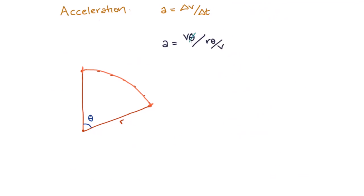And if you cancel out the thetas and move the v up to the top, we get that the acceleration a is equal to the velocity v squared divided by r the radius. We have now found the magnitude of the acceleration of an object undergoing uniform circular motion, also known as the centripetal acceleration.